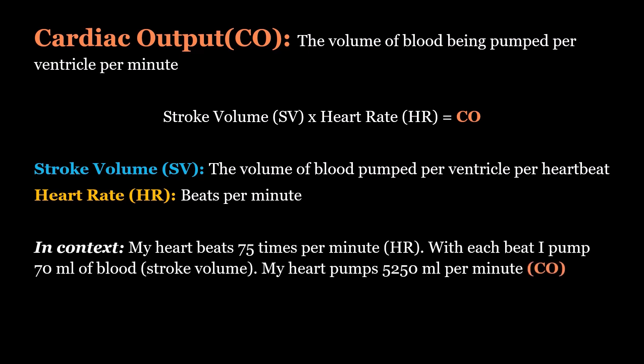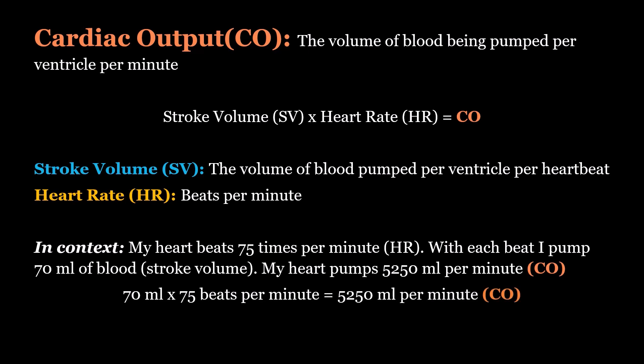If my heart beats 75 times in one minute and with each beat I'm pumping out 70 milliliters of blood, we know that I pumped 5,250 milliliters of blood out of my heart, which is my cardiac output.